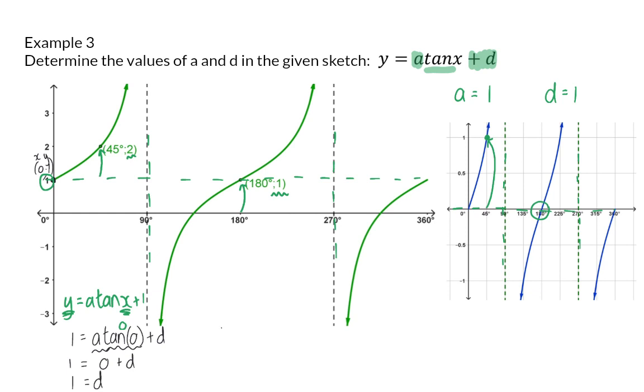And now that we know the d value, we can substitute another coordinate to determine the a value. I'm going to choose to use the coordinate 45, 2. Therefore, my y value will become 2, and the x value will become 45 degrees. Tan of 45 is 1, which means we now have 2 is equal to a times 1 plus 1. Solving for a, you will also get 1. This method of substituting in coordinates will also always work, but it can sometimes take a bit longer.